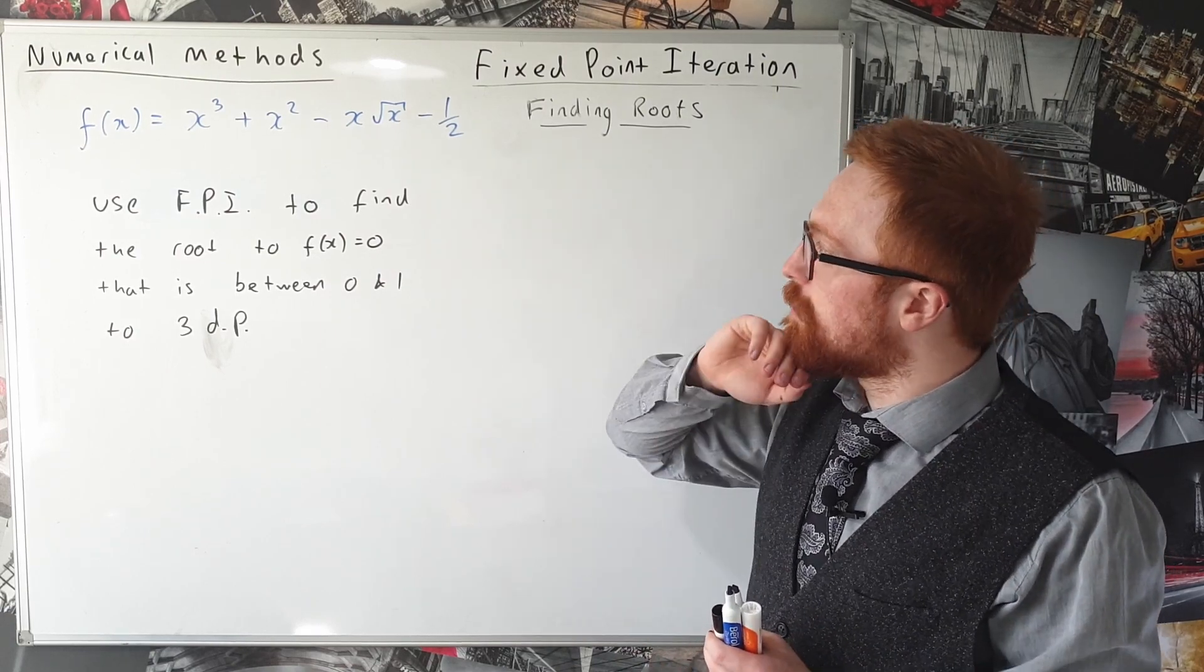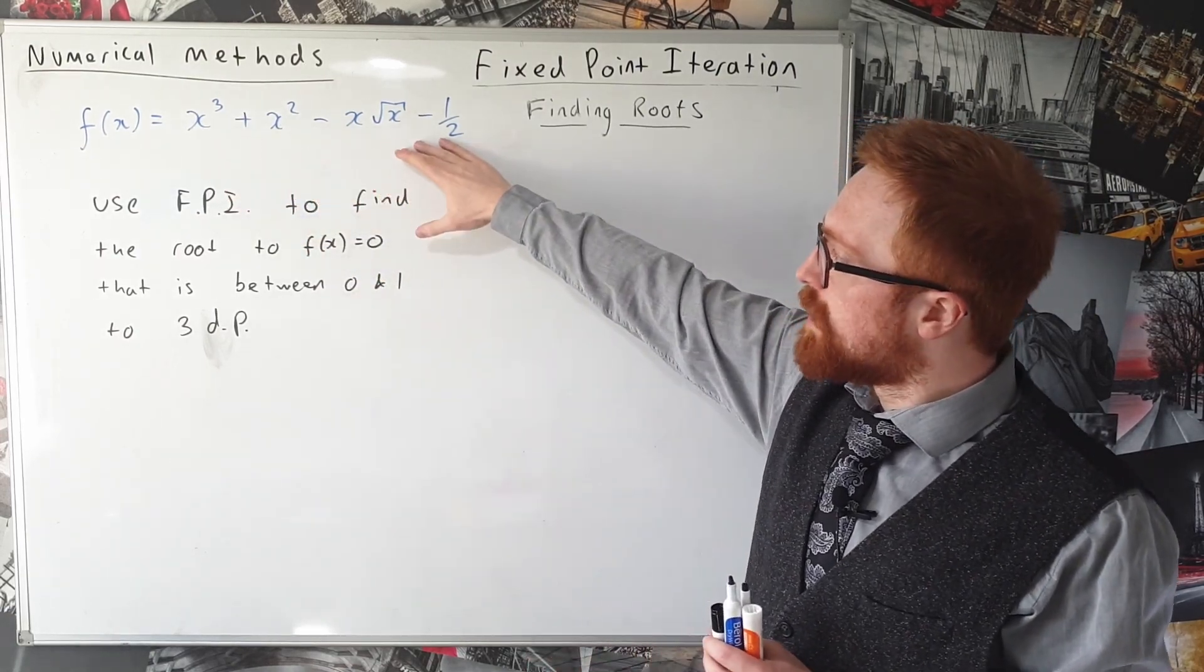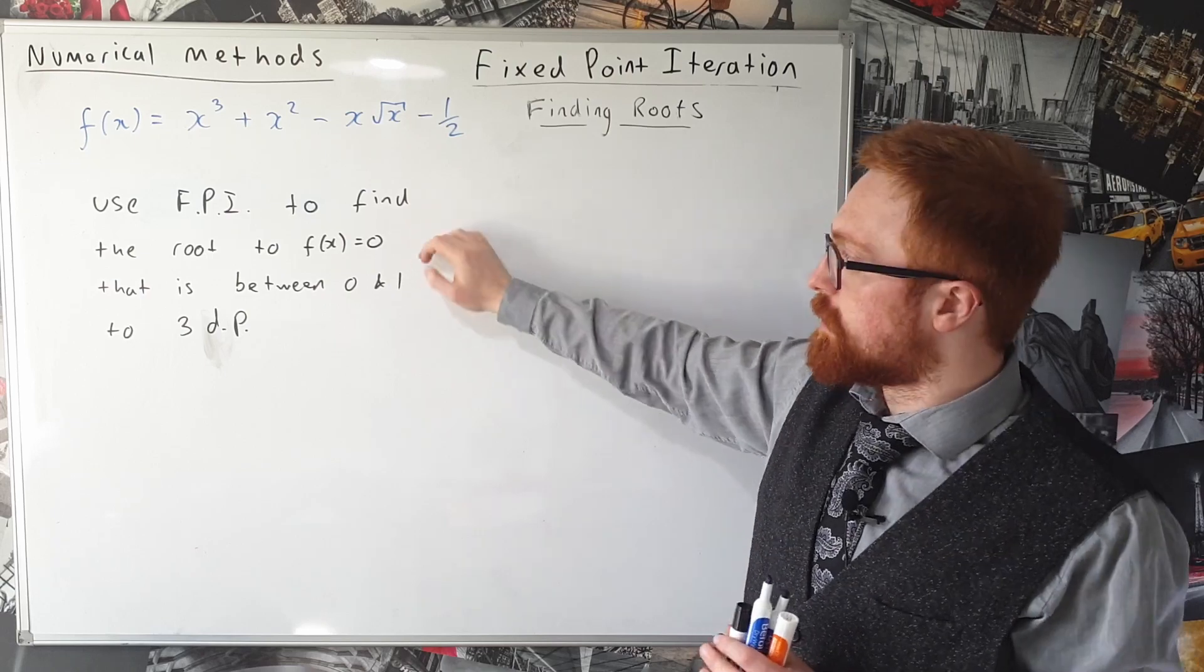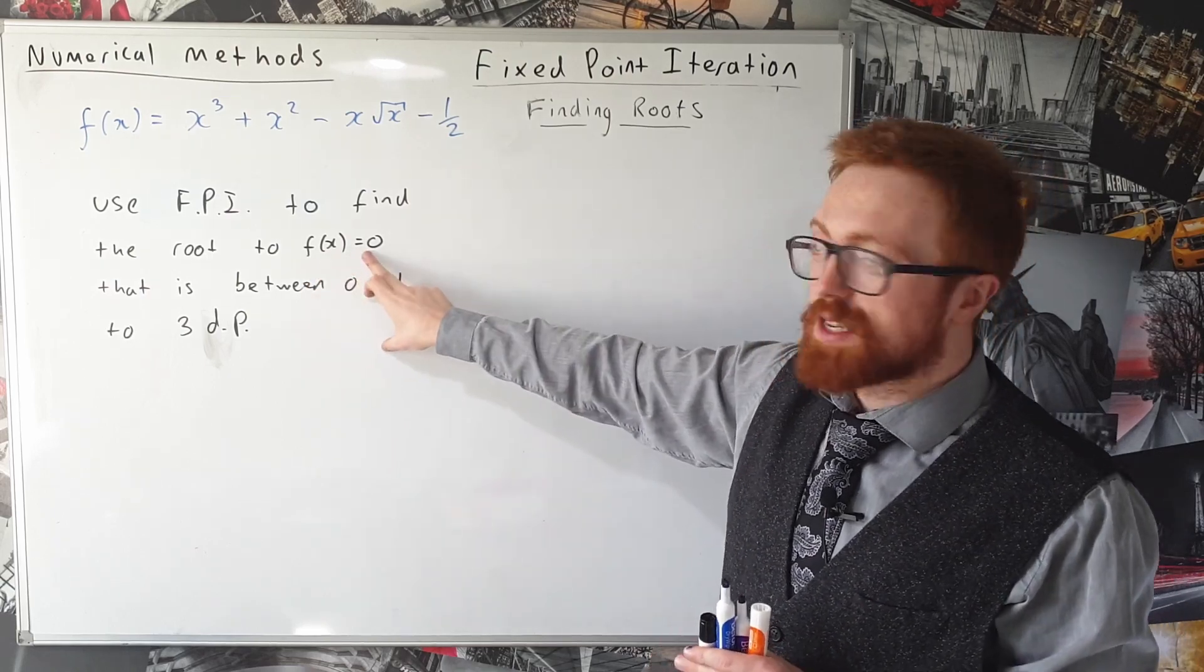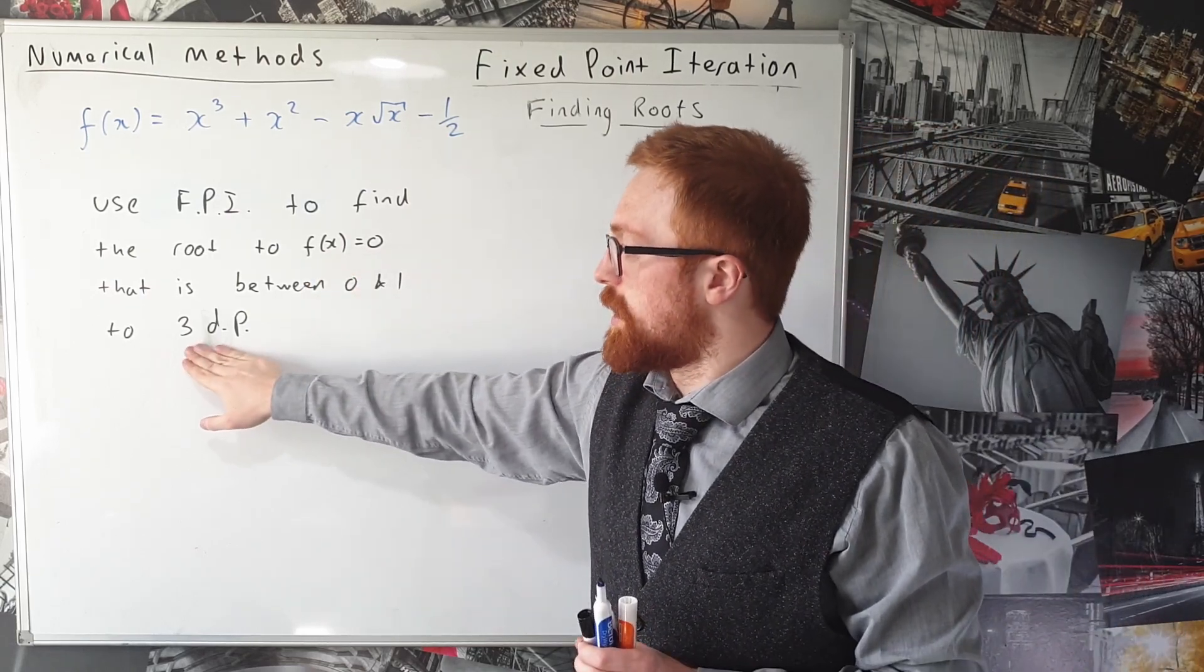We're looking at an example here with this rather nasty looking function, and we're asked to use fixed point iteration to find the root f(x) equals zero accurate to three decimal places.